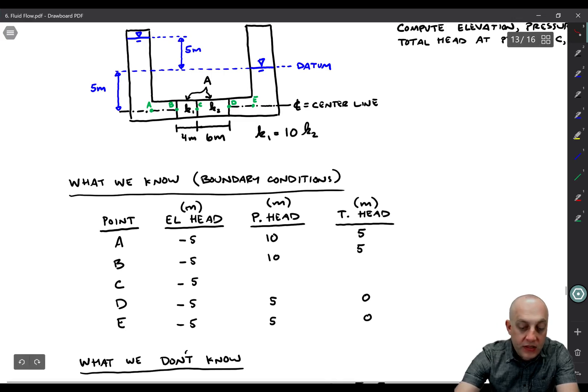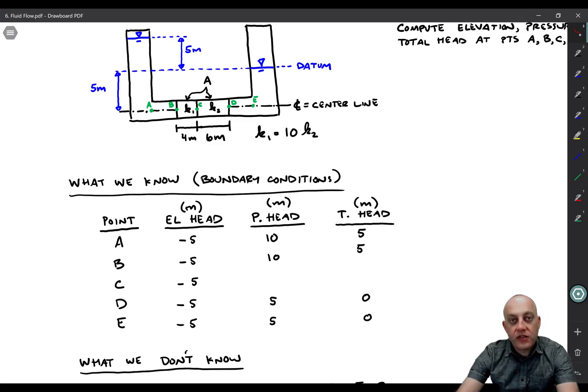Now that we know elevation and pressure heads at points A and B, it's easy to calculate the total heads by summing them up. So we get the total head as five at points A and B, and zero at points D and E. Now point C is the tricky one. We don't know the pressure head at point C because there is no free path from point C up to a water surface. No matter which direction, you need to go through soil, so there's some head loss.